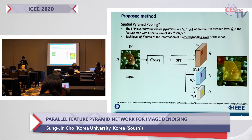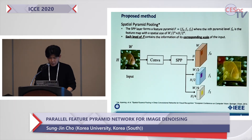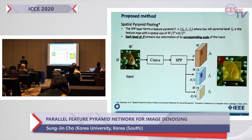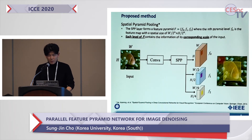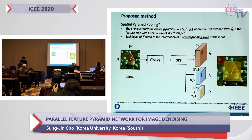In our network, SPP forms three levels of feature pyramid. As shown in this figure, the size of the feature map decreases as the level of the pyramid increases. Each level of the feature pyramid contains the information of its corresponding scale. For example, each pixel pointed with red and yellow in F0 and F2 covers areas with different sizes — F0 covers a small area like coral reef in the image, while F2 covers a large area like a fish.